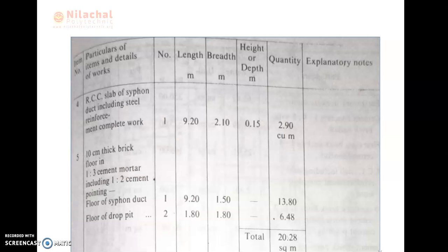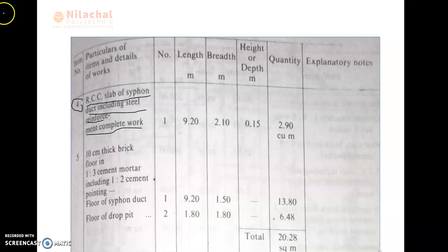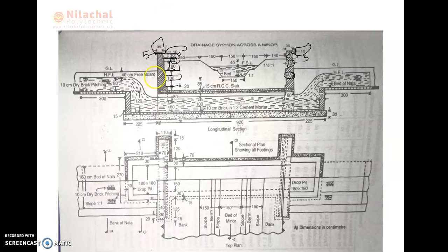Then, after that, we are going to the next step. The item number is 4 — the access slab, including steel reinforcement, complete. We use one number. The length of the access slab is checked from the longitudinal section. This is a 30 mm metric access slab.